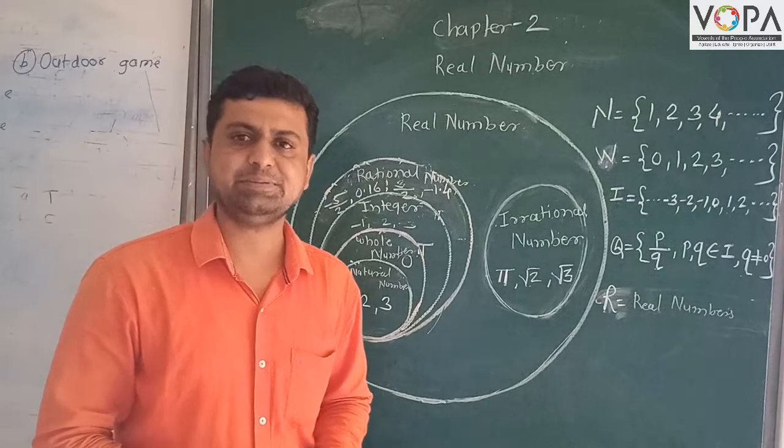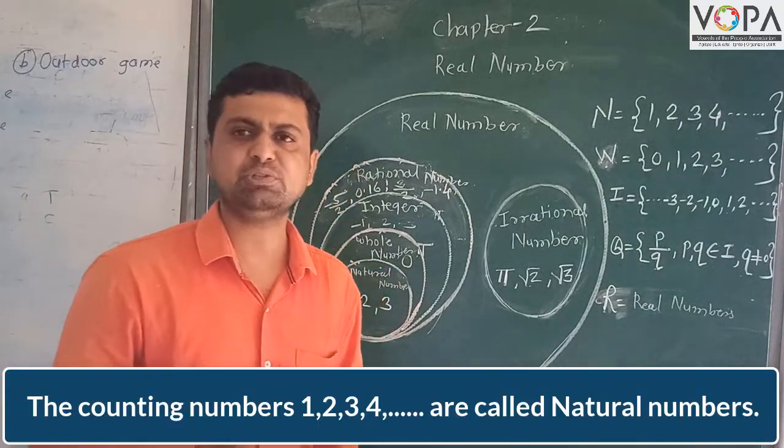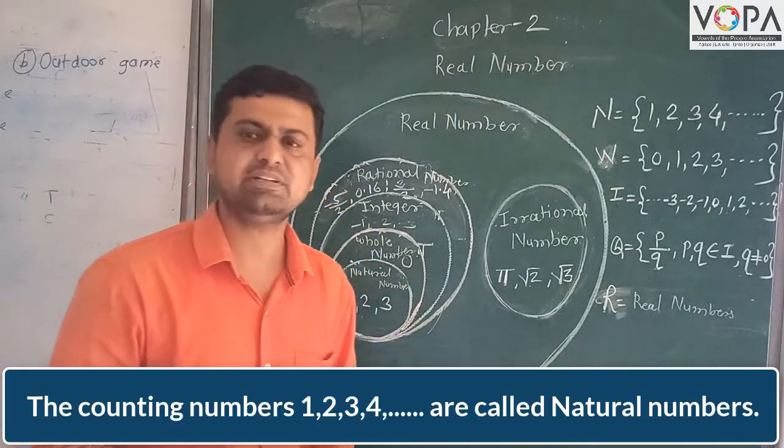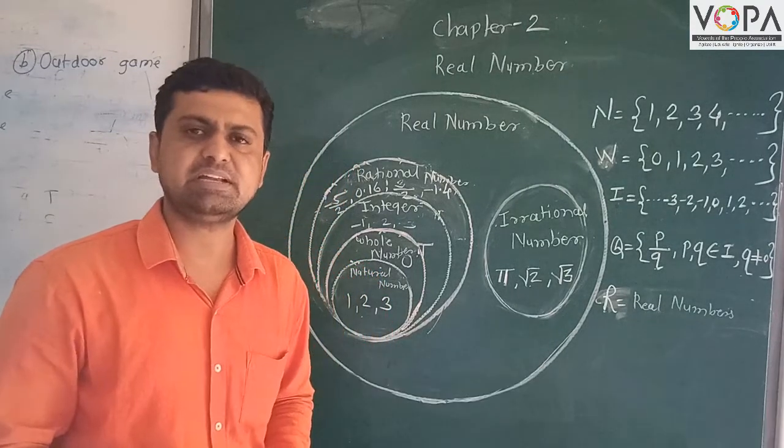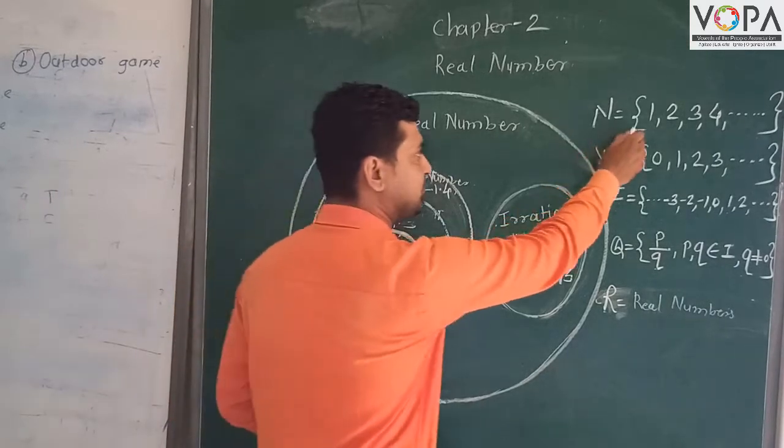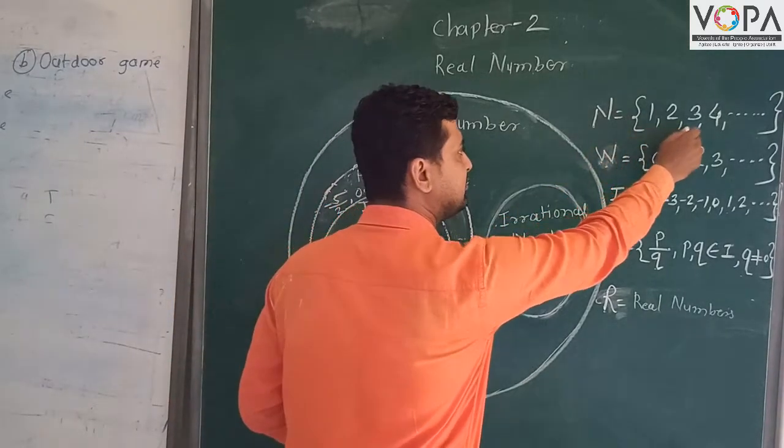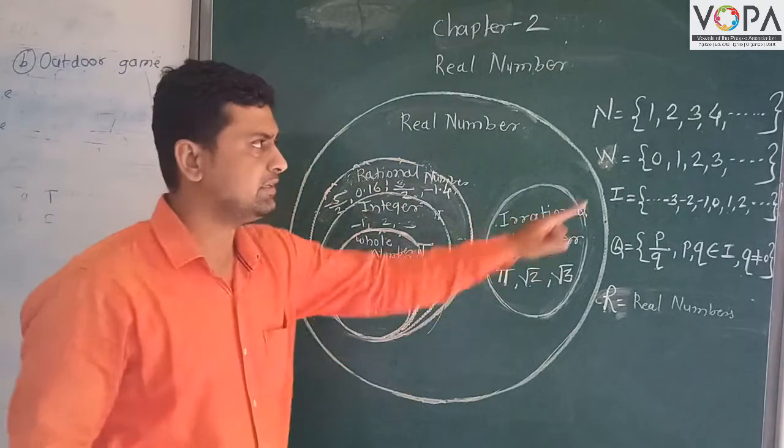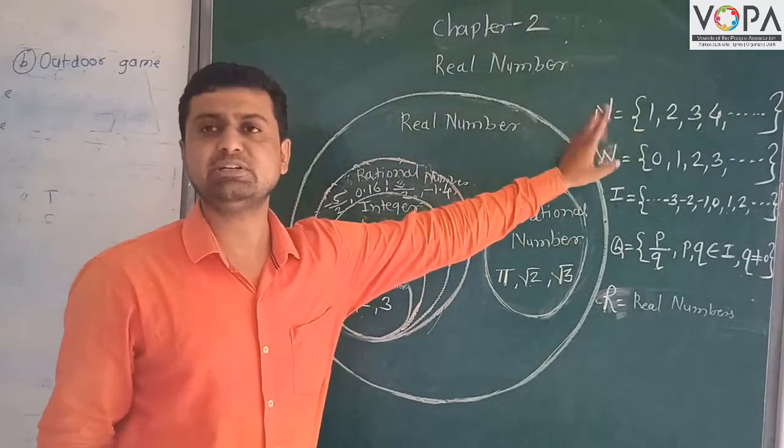Natural numbers: the counting numbers 1, 2, 3, 4 are called natural numbers. These numbers are written in the set form N equals open curly bracket 1, 2, 3, 4, dot dot dot, close curly bracket. 1, 2, 3, 4 are called natural numbers.